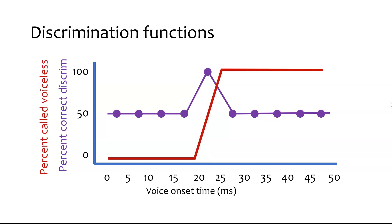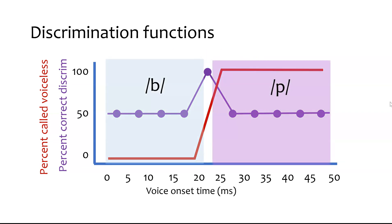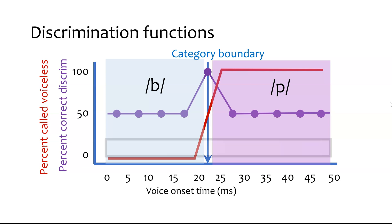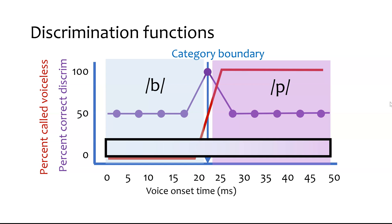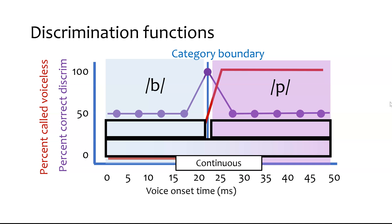If we superimpose those two lines, we can see that the category boundary is consistent with both. It's where the identification function crosses over, and it's where the discrimination function has a peak. Left of that boundary, everything is a B, and to the right, everything is a P — our category boundary is somewhere around 22 or 23 milliseconds. It's important to contrast this against continuous perception, where we would assign things a gradient perception that's continuously changing without any discrete jumps. Instead, it looks like perception is more categorical — it just jumps immediately from one to the next.